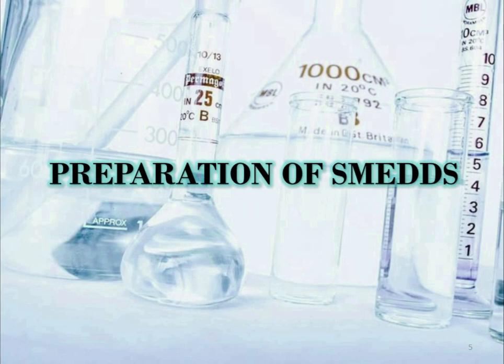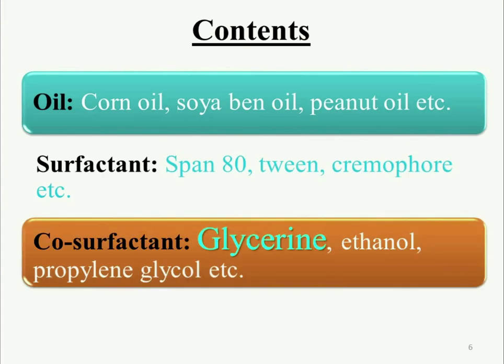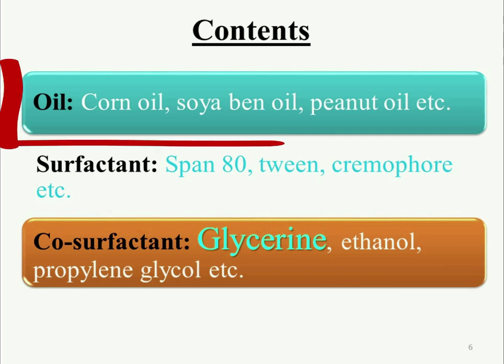Now, coming to the preparation of SMEDDS — this preparation is composed of three major components: oil, surfactant, and co-surfactant. Oil is generally used in this SMEDDS formulation because it solubilizes the lipophilic drug within the total formulation and also facilitates intestinal lymphatic uptake. Most of the oils used in this formulation are corn oil, soybean oil, and peanut oil.